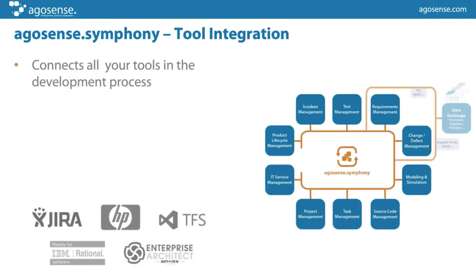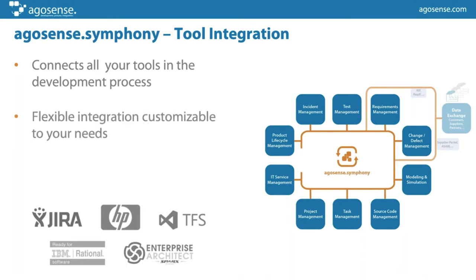Going back to tool integration — what you see here behind these domains like requirements management, defect management, and test management are different tools such as IBM Rational DOORS or Micro Focus Quality Center. This picture shows that all the tools can be connected with each other, like a kind of bus system. Each tool integration — for example, DOORS and Quality Center — can be completely customized to your needs. If two departments use the same tools but have different approaches to sharing data, that can all be achieved with our platform.